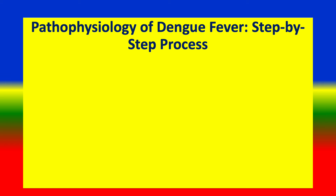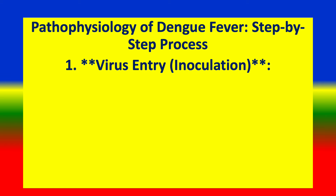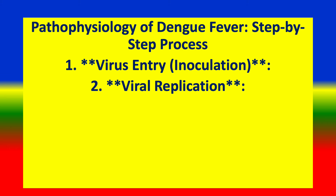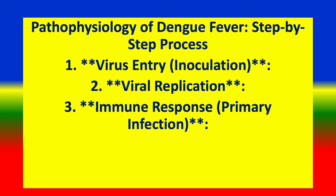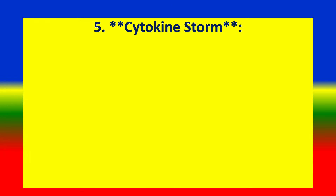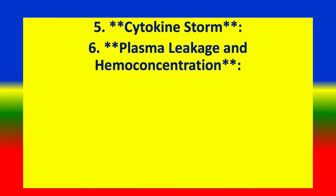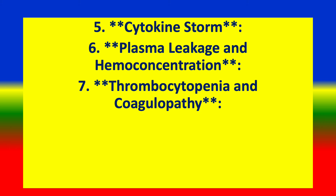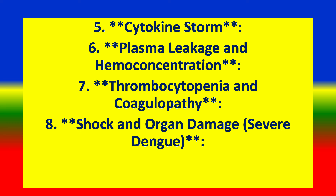Pathophysiology of dengue fever — step-by-step process: Step 1, virus entry; Step 2, viral replication; Step 3, immune response during primary infection; Step 4, antibody-dependent enhancement; Step 5, cytokine storm; Step 6, plasma leakage and hemoconcentration; Step 7, thrombocytopenia and coagulopathy; Step 8, shock and organ damage.